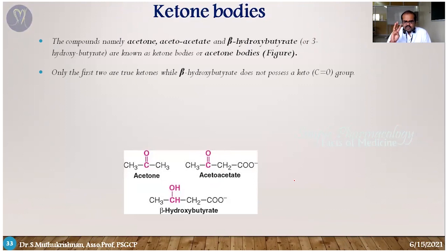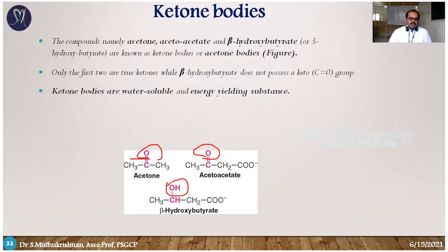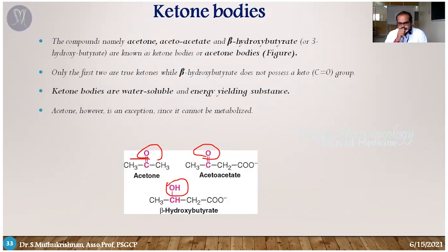The ketone bodies are three substances in our body: acetone, acetoacetate, and beta-hydroxybutyrate. Unfortunately, the first two — acetone and acetoacetate — are true ketones, but beta-hydroxybutyrate does not possess a keto group. An important physical property of ketone bodies is that they are easily water-soluble. Acetone, although classified as a ketone body, is not considered a major energy source. The true functional ketone bodies are acetoacetate and beta-hydroxybutyrate.